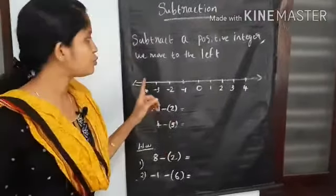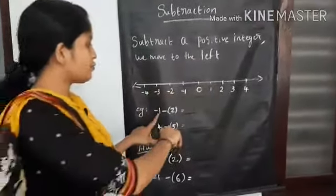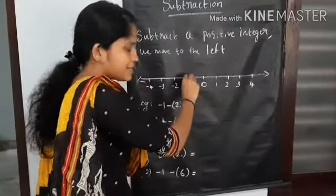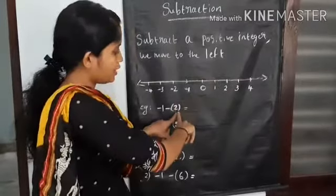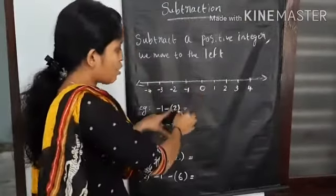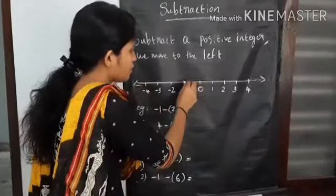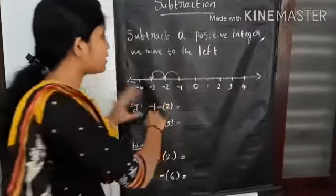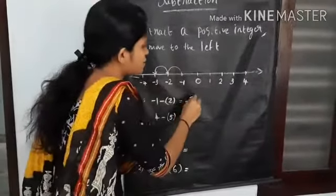Then what we have to do? We have to move to the left, from minus 1. From this number we are going to subtract the positive integer 2, that means we have to move to the left. How many places? 2 places. 1, 2, 3. The answer is minus 3.